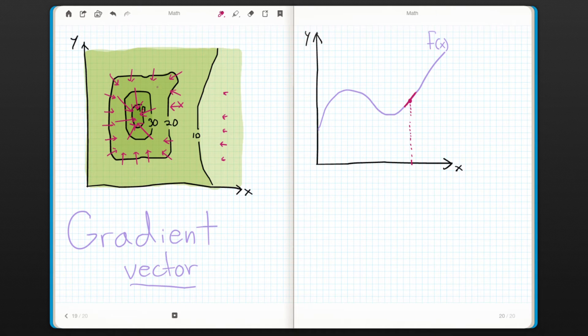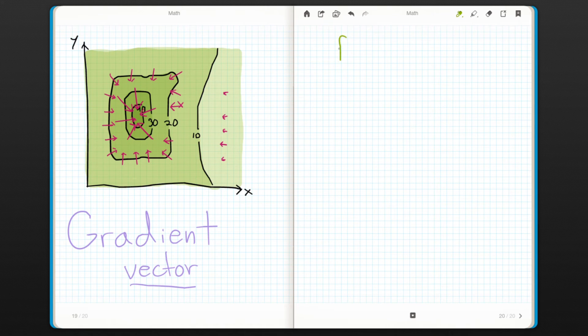Now that we have a basic idea of what the gradient of a function looks like, let's see how we can actually calculate it from a given function, f of x and y. The gradient of f is written with a little upside-down triangle called a del.